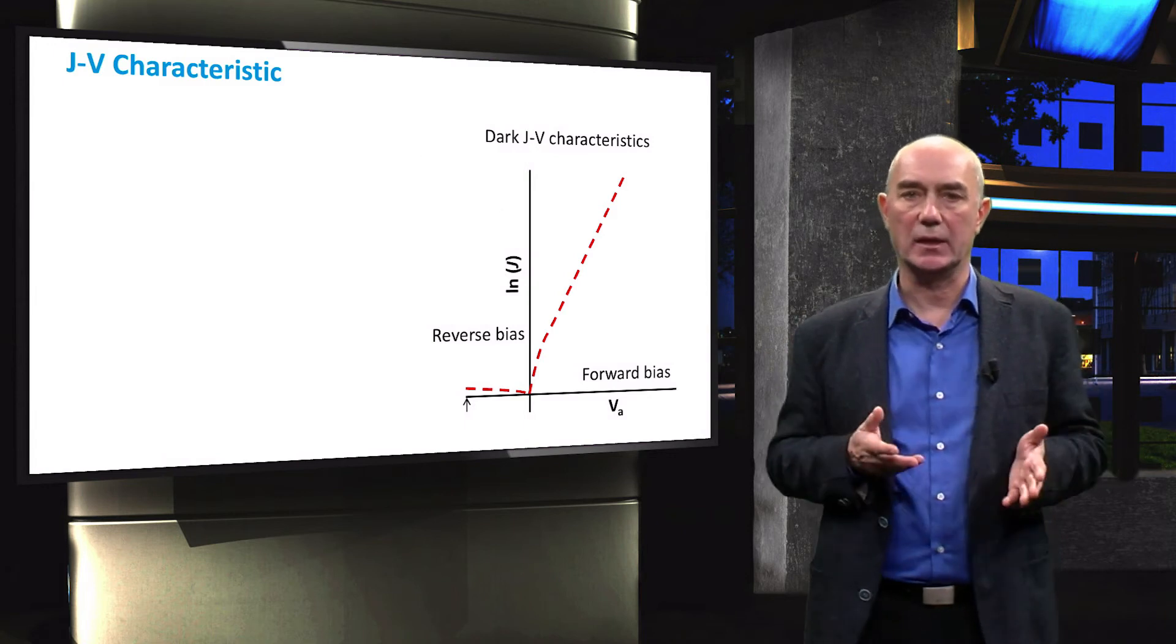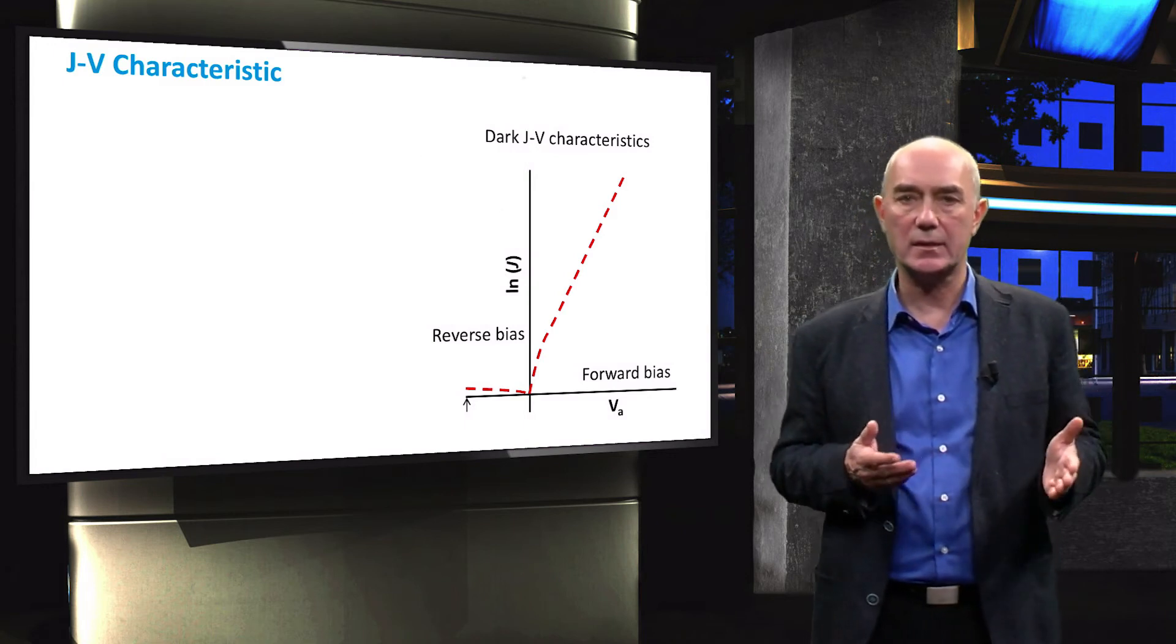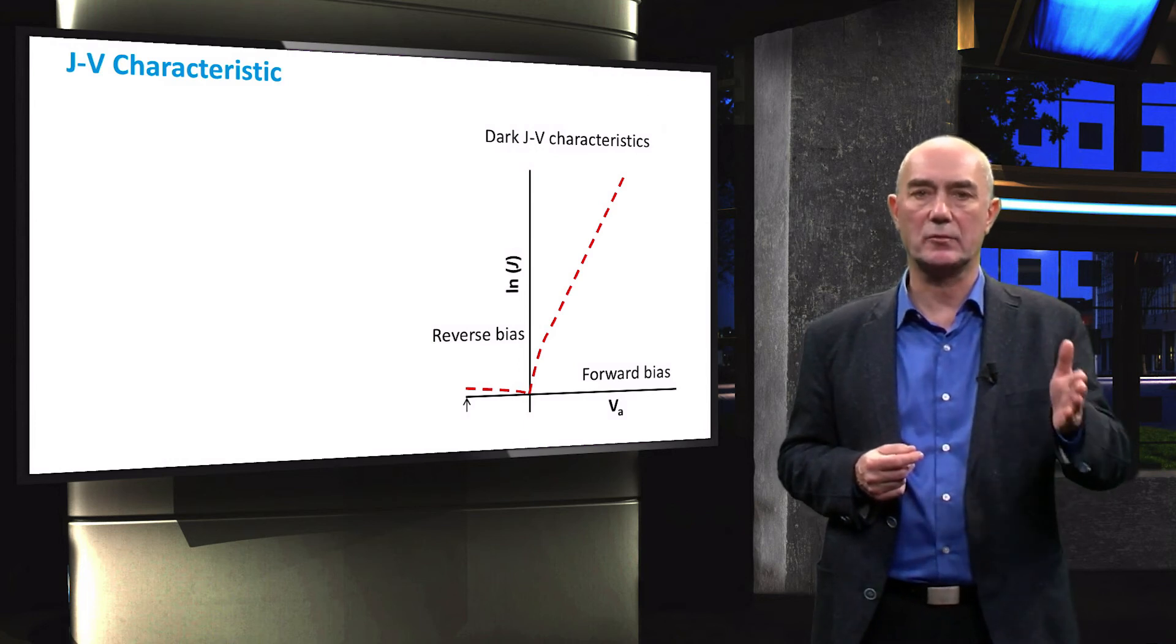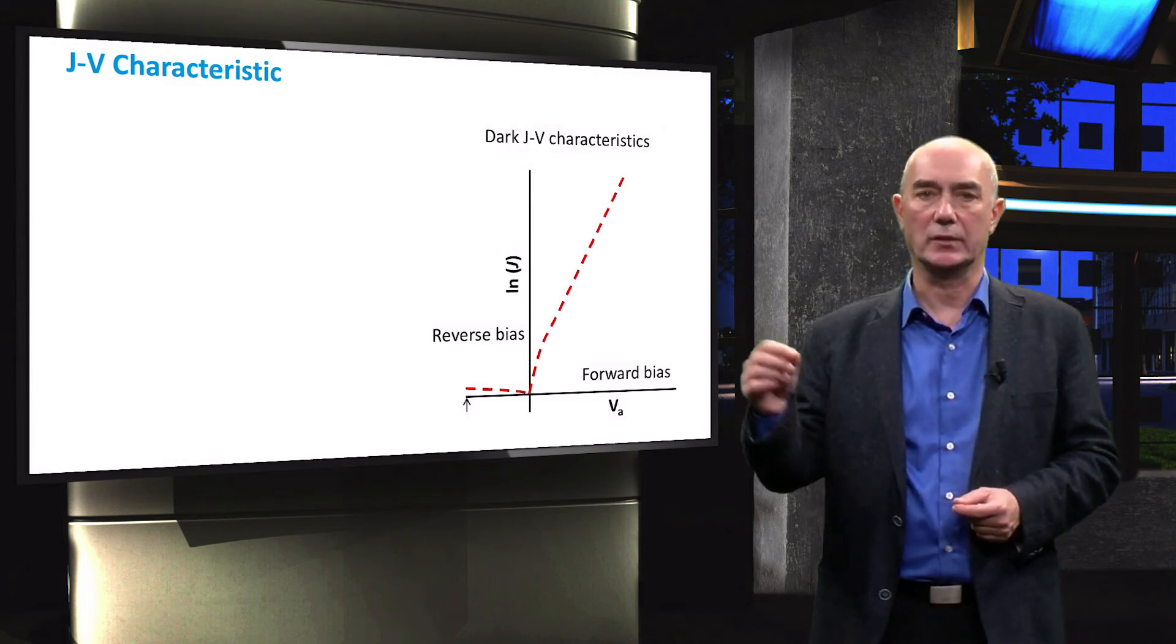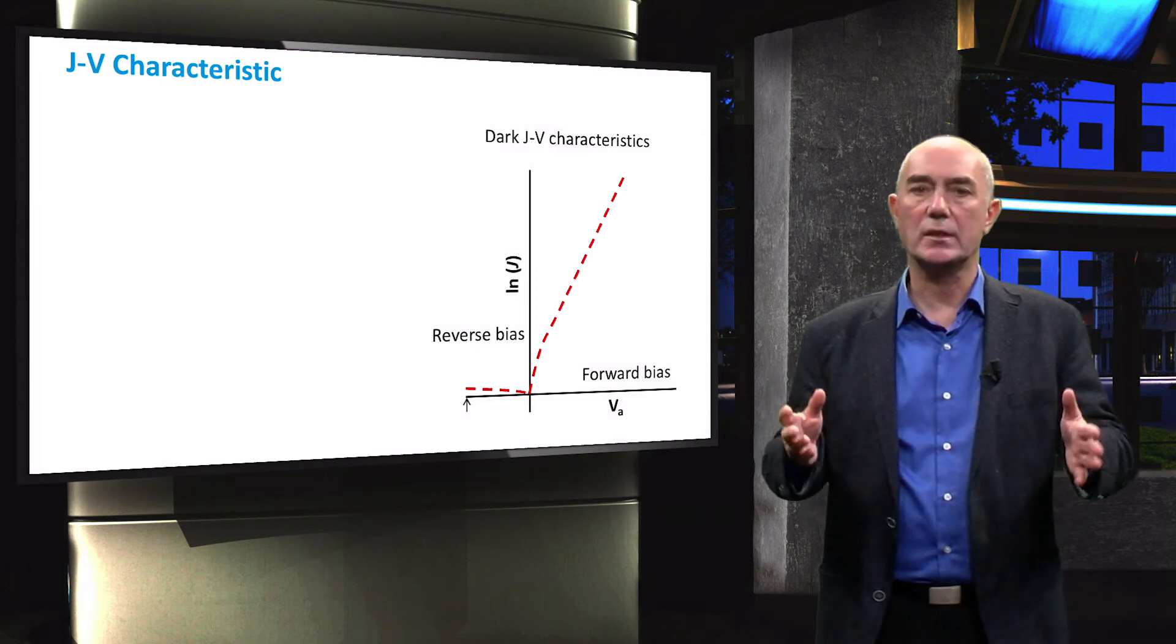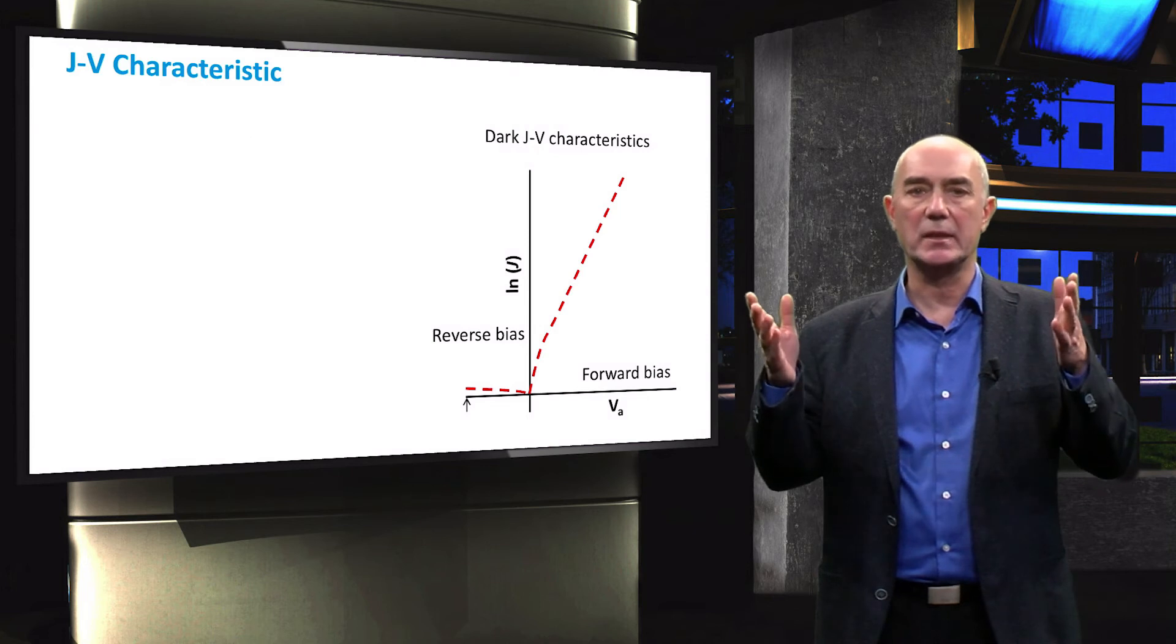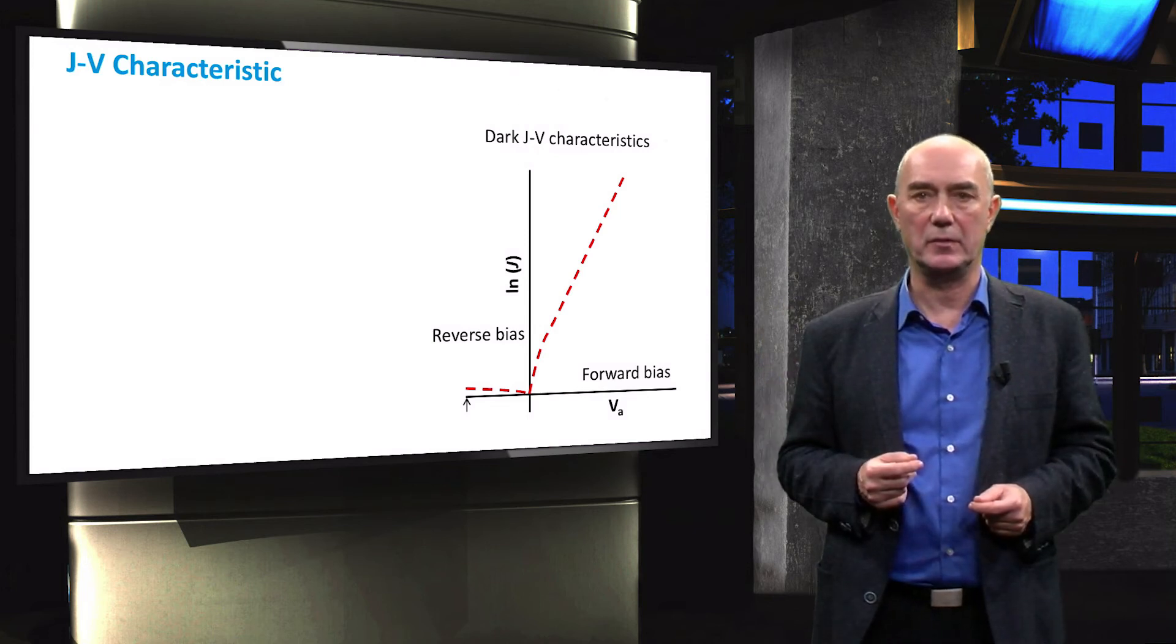Rather than exponentially increasing at negative biases, this current density actually approaches the dark saturation current, J0. And J0 is a very important parameter of solar cells, and we will discuss it in detail in a later video.